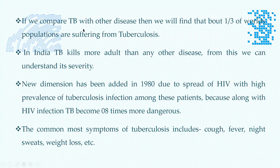Massive emaciation and respiratory problems are very common phenomena in tuberculosis in cattle. About one-third of the world's population suffers from tuberculosis, especially in underdeveloped countries. This is an important zoonotic disease — from animals it can come to human beings and vice versa. The prevalence of tuberculosis increased greatly in 1980 when HIV spread, as these patients are immunocompromised, making tuberculosis eight times more dangerous.